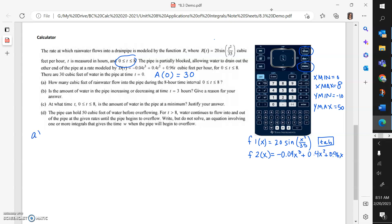Part A says, how many cubic feet of rainwater flow into the pipe during the 8-hour time interval? I don't care about the initial amount. I don't care about the draining amount. I only care about the amount flowing into the pipe. So I'm going to go from 0 to 8 of the R equation.